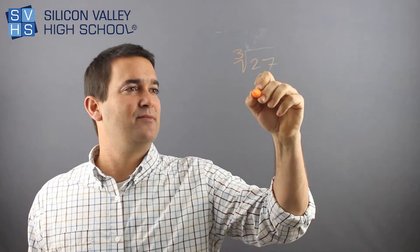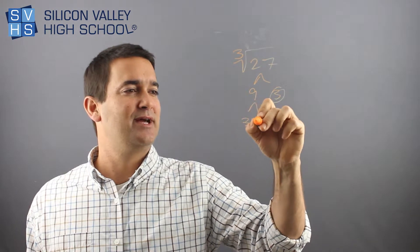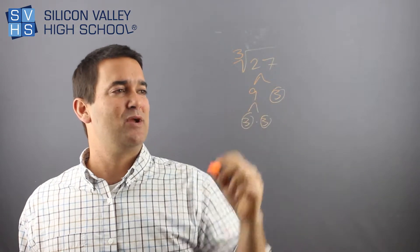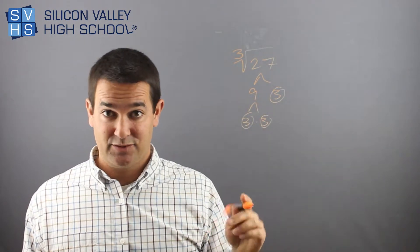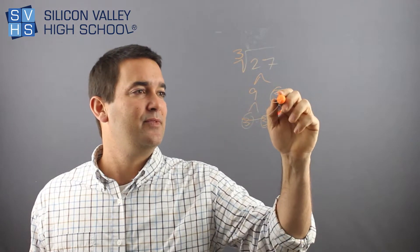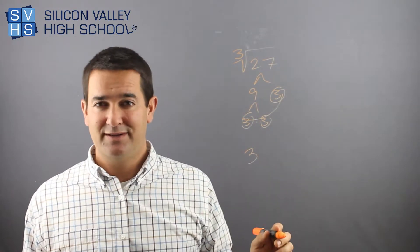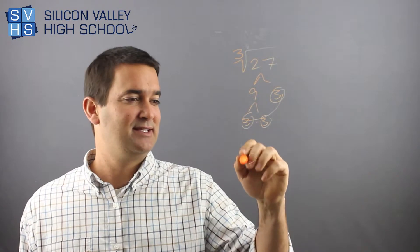So you would break this down. That's 9 times 3. This is obviously 3 times 3. It's a perfect miracle. Do I have any triplets or groups of 3s? I do. They all come out of jail. Is there anybody stuck in jail? In this case, there is not. So that's the answer.